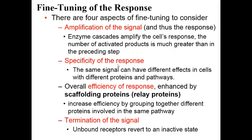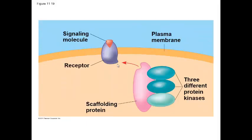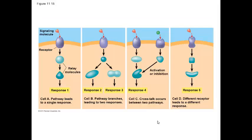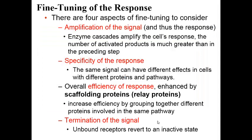The efficiency of the response is increased using scaffolding proteins. These scaffolding proteins hold all the relay proteins and all the protein kinases in one location, keeping all the proteins associated with the pathway together in order to help the pathway work more efficiently. Finally, the response of the target cell ends when the receptor no longer has a ligand bound to it.